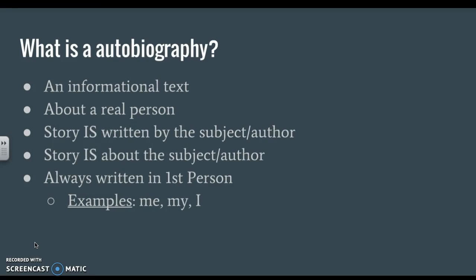What is an autobiography? An autobiography is an informational text about a real person that is written by the subject and author, and is about the subject and author themselves. It is always written in first-person. Some examples of first-person buzzwords that you will see as you're reading are me, mine, I.